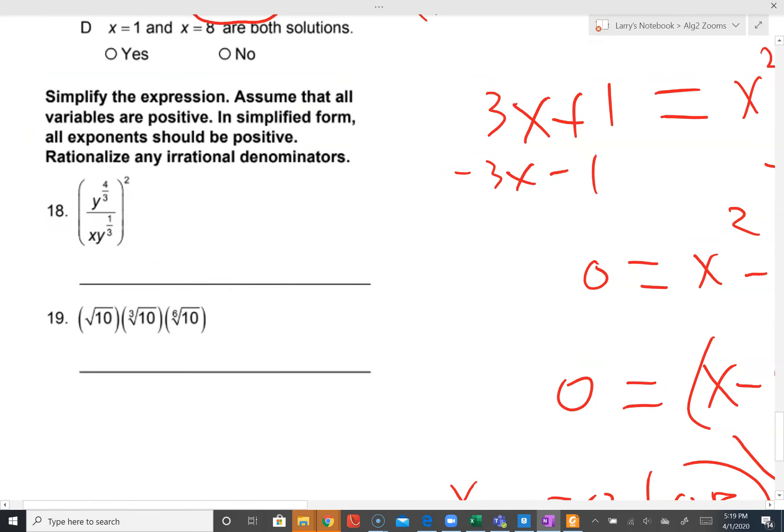Number eighteen. Power to a power we multiply. Thus, four over three times two becomes eight over three in the top. In the bottom, x to the two times one is x squared. Y to the one-third squared becomes y to the two-thirds. Now we have this y over y. This, we can employ the quotient rule. When divided, we subtract the exponent. Eight over three minus two over three is six over three, reduces to two. So this becomes y squared over x squared.